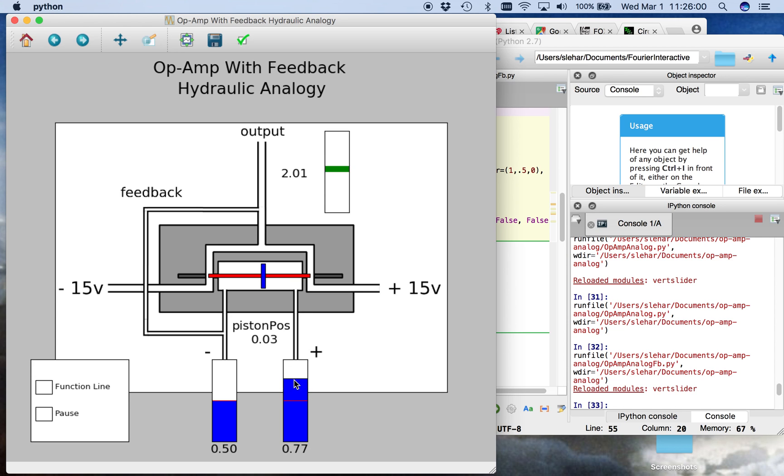If I increase the non-inverting input, it pushes the piston to the left, but as it does so, it opens this valve, which creates a positive pressure, and that positive pressure comes around and feeds back, adding to the inverting input, and it brings the piston to a stop.